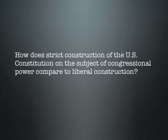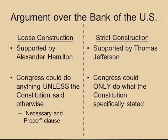How does strict construction of the Constitution on the subject of Congressional power compare to liberal construction? The argument over the Bank of the United States illustrates this. Loose construction, supported by Alexander Hamilton, held that Congress could do anything unless the Constitution said otherwise — relying on the necessary and proper clause. Strict construction, supported by Thomas Jefferson, held that Congress could only do what the Constitution specifically stated.